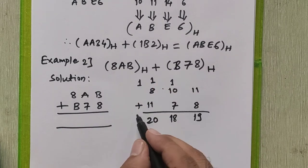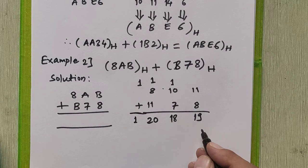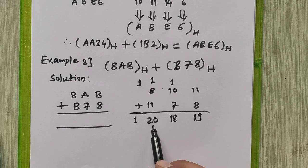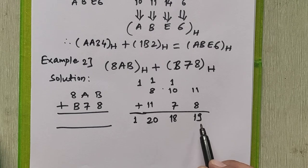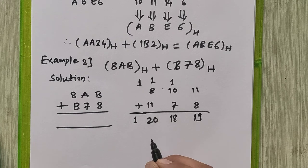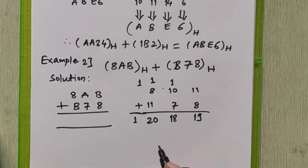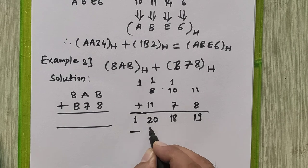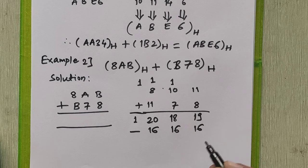There are no further digits for addition, so we copy the carry as 1. But in the answer there are certain invalid digits in hexadecimal: 20 is not valid, 18 is not valid, and 19 is not valid. So we will subtract 16 from each invalid digit: 16 from 20, 16 from 18, and 16 from 19.